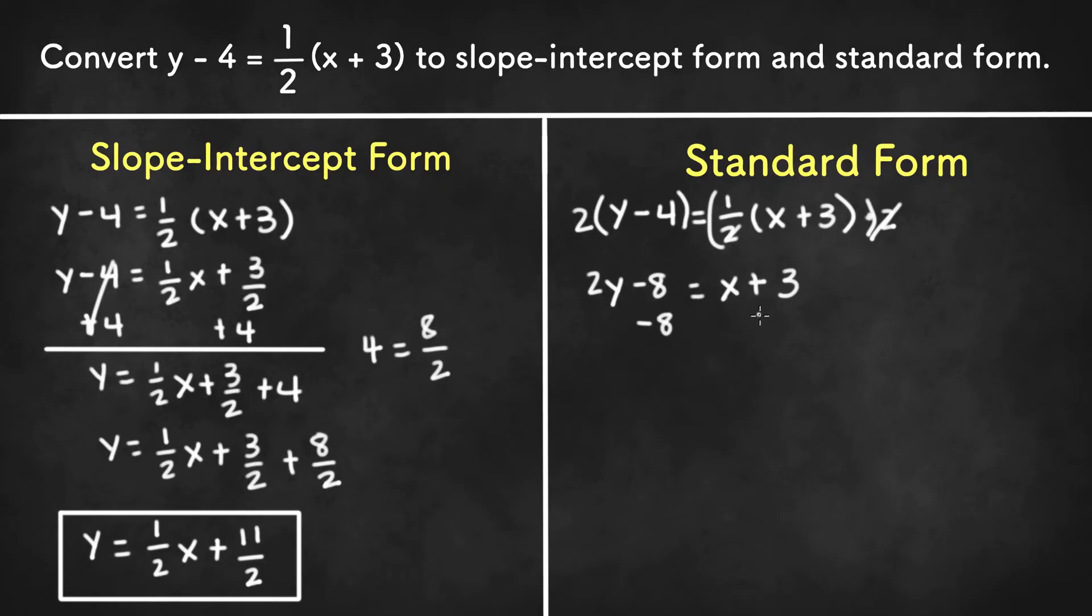Now we can add 8 to both sides, and we will get 2y equals x plus 3 plus 8, or x plus 11.